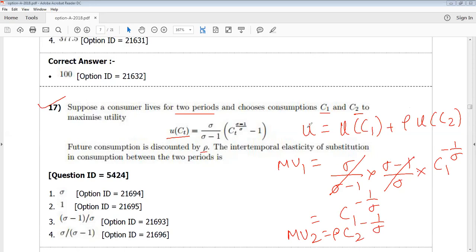So U is equal to this. MU1 by MU2, where MU2 is basically this entire expression, the partial derivative of that. So now how can we write MU1 by MU2? We can write MU1 by MU2 as C1 by C2 to the power...